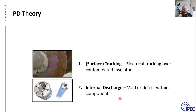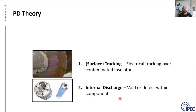On switchgear, IPEC tends to focus on switchgear and cable. On switchgear, we classify really two types. The first one is surface tracking — that's when you've got maybe contamination on the outside of an insulator, giving some surface tracking activity: electrical tracking over a contaminated insulator. The other type is internal discharge, where you've got a defect inside solid insulation — maybe a crack or a gas-filled void from manufacture or damage.